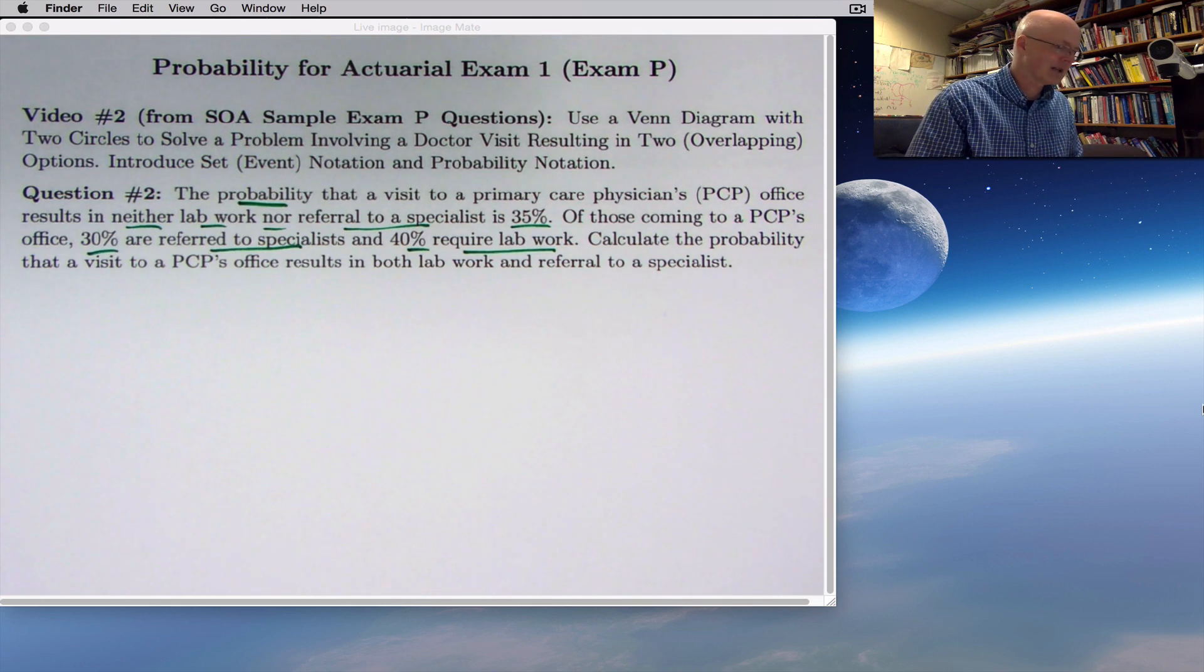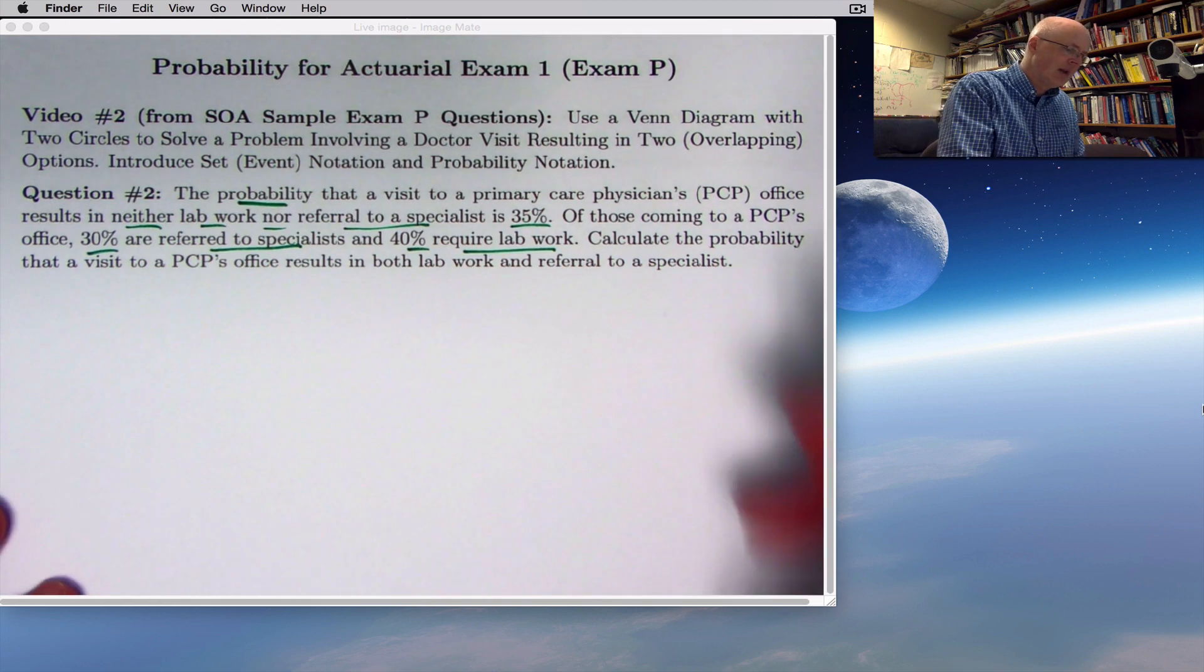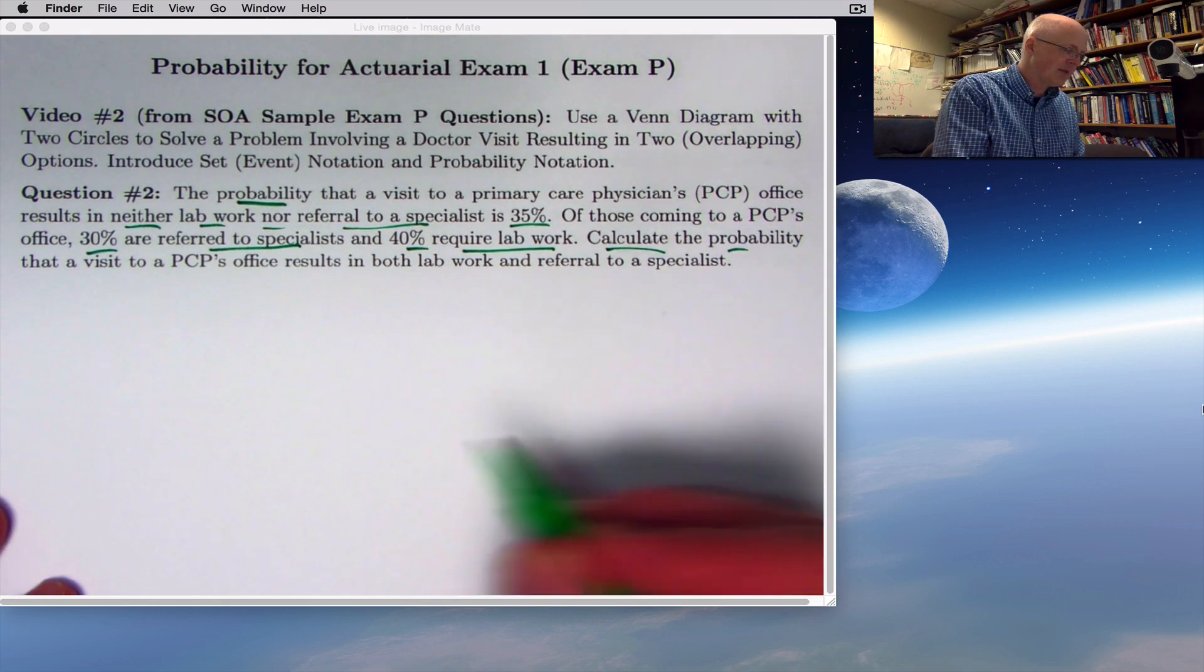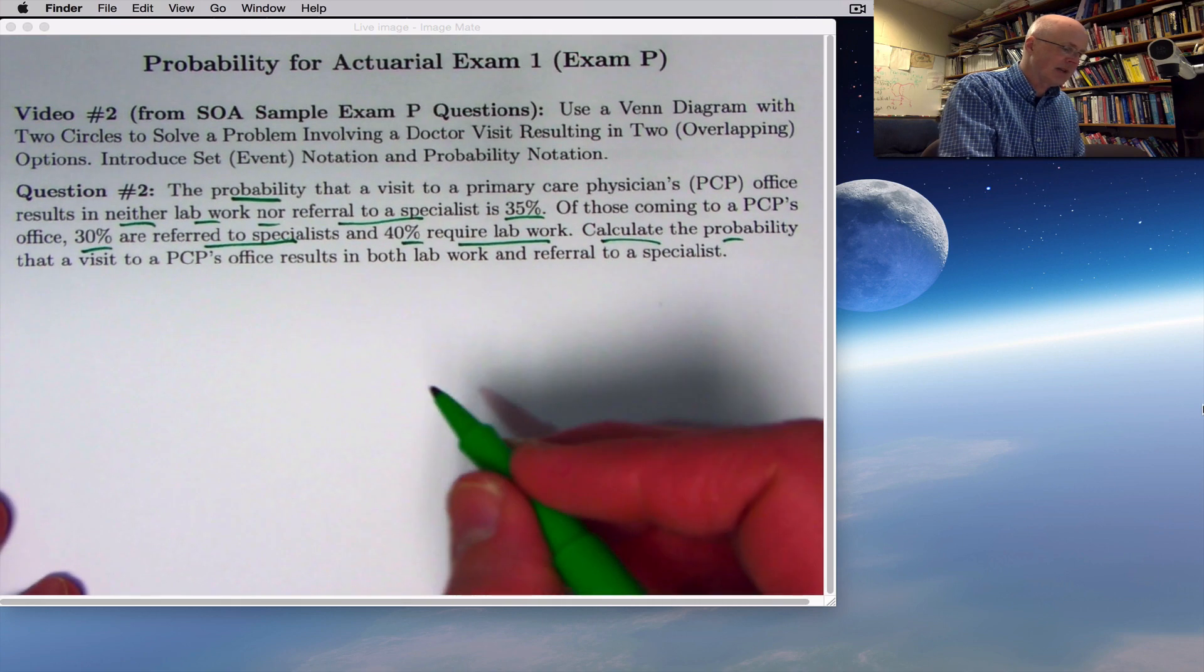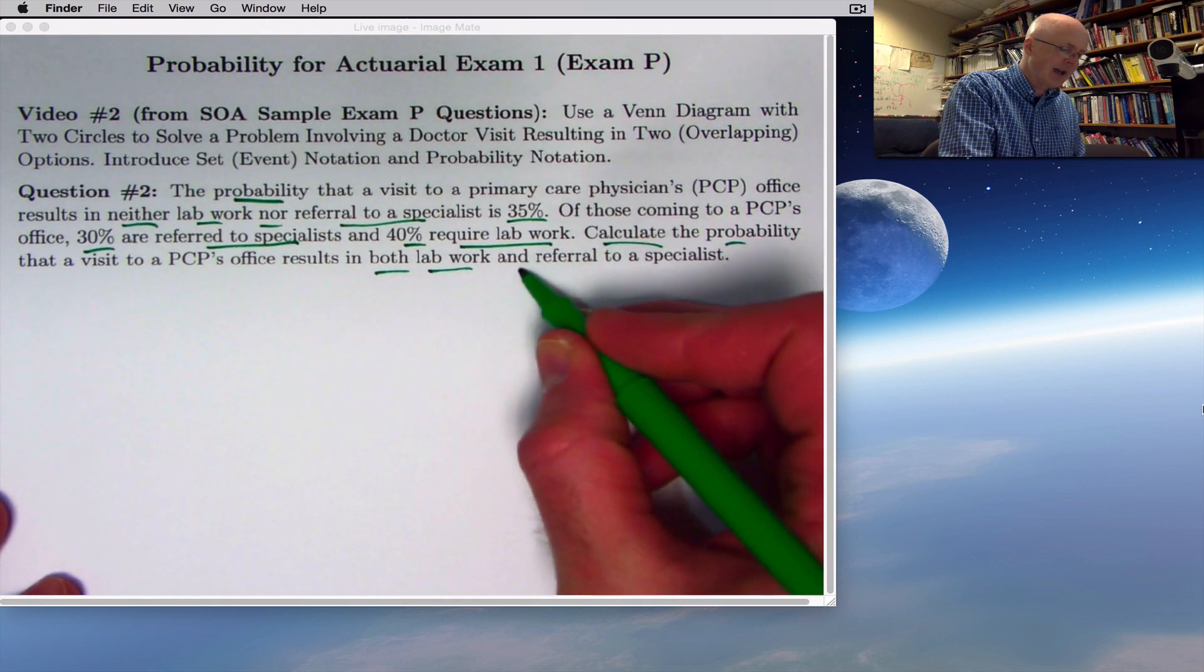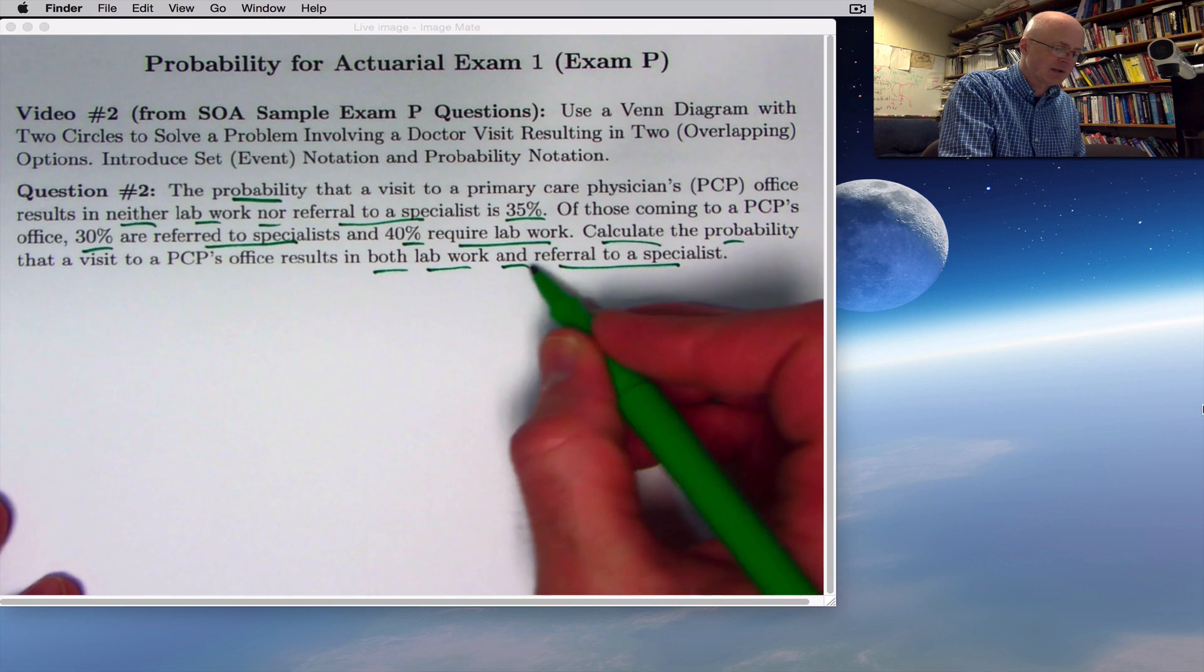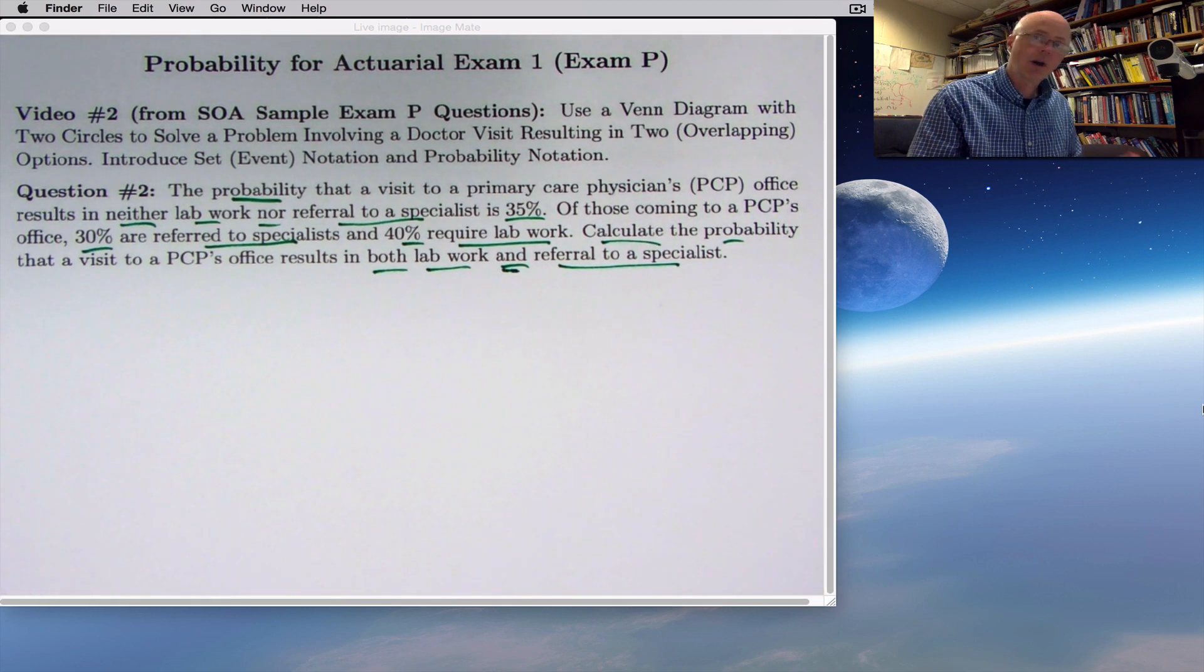These percentages still are assessments of likelihoods. But keep in mind that somebody could be referred to a specialist and have lab work done. The goal is to calculate the probability that a visit to the PCP's office results in both lab work and referral to a specialist. This word 'and' is important. We are talking about the overlap, people who have both done.